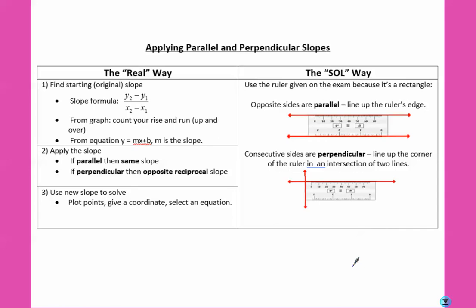The other thing you guys might have to do with graphs has to do with parallel and perpendicular lines. If you need to find an original slope, you have your slope formula, which is y2 minus y1 over x2 minus x1. If you're going on a graph, you can count your rise and your run, figure out how much you go up, and put it over how much you go over. And then if you're using the equation y equals mx plus b, your m is your slope.